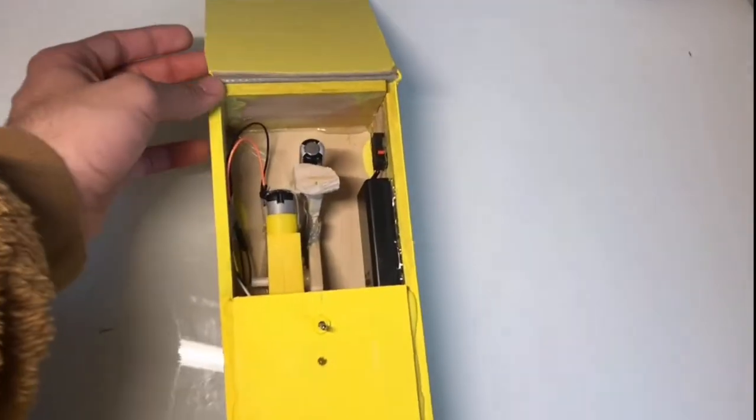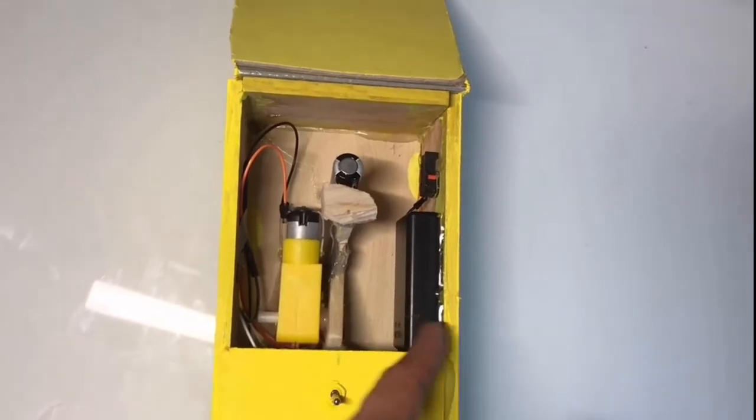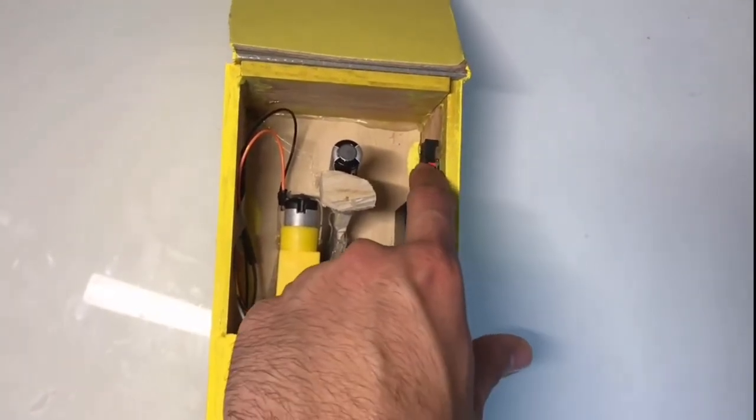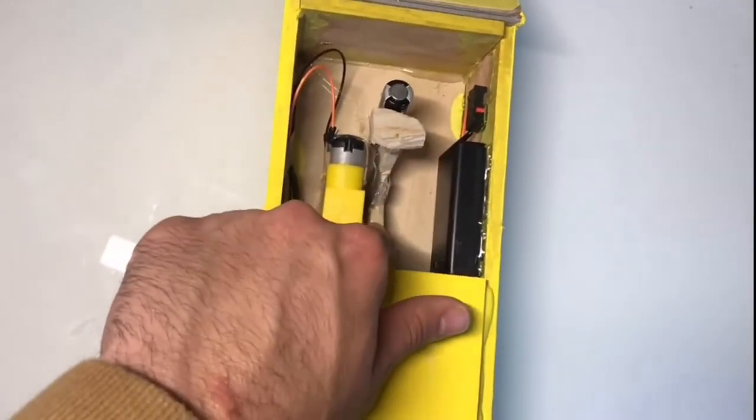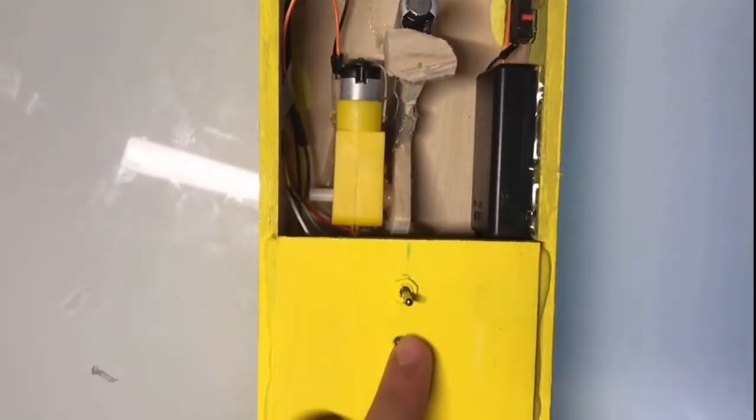If we take a look on the inside, we have a DC motor, a battery pack, a switch, a robotic arm, and then underneath we have a switch and an LED light bulb.